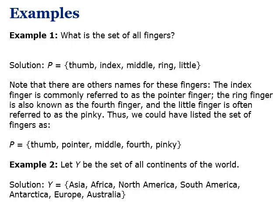Example: What is the set of all fingers? We list down all the fingers: P = {thumb, index, middle, ring, little}. Note that the index finger is also called the pointer finger, the ring finger is also known as the fourth finger, and the little finger is often called the pinky. So the set could also be written as {thumb, pointer, middle, fourth, pinky}.